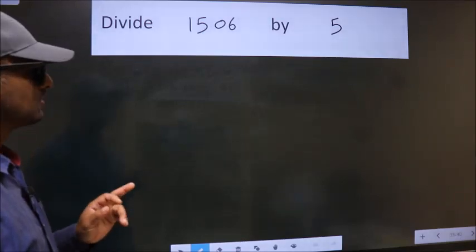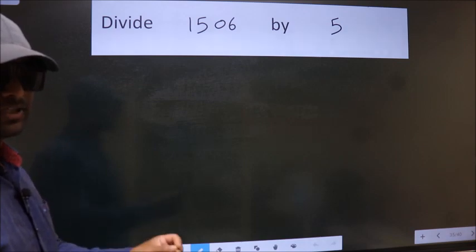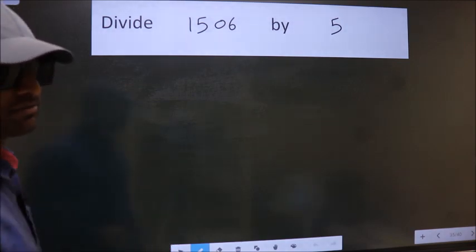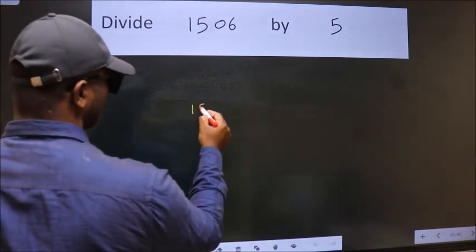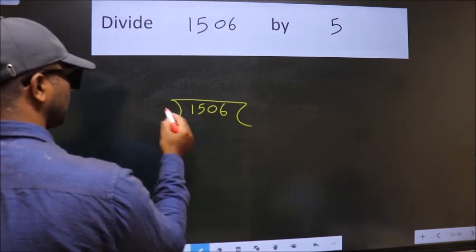Divide 1506 by 5. To do this division, we should frame it in this way. 1506 here, 5 here.